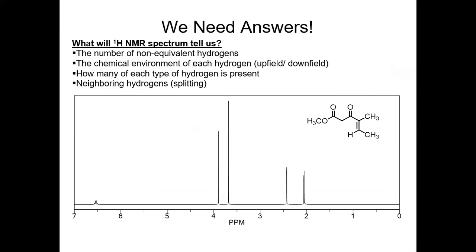This is an NMR spectrum on the screen, and NMR is going to tell us four things. We're talking about proton NMR — there's a difference between proton NMR, carbon NMR, boron, fluorine, and silicon. You can look at several different types of nuclei, but for this we're going to be talking about proton NMR.